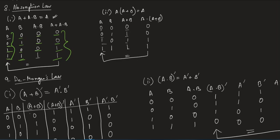Similarly, the second absorption law states that A into (A plus B) equals A. Using the same technique, under B we write 0, 1, 0, 1, and under A we write 0, 0, 1, 1. Now computing A plus B: 0+0=0, 0+1=1, 1+0=1, and 1+1=1.